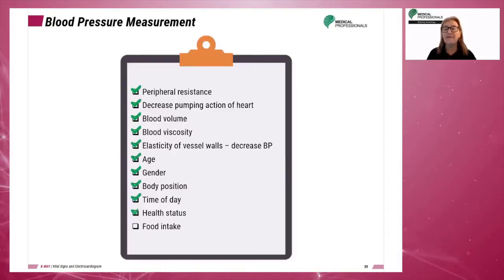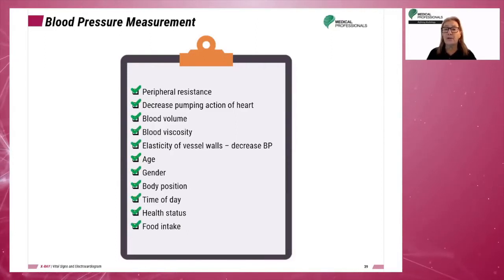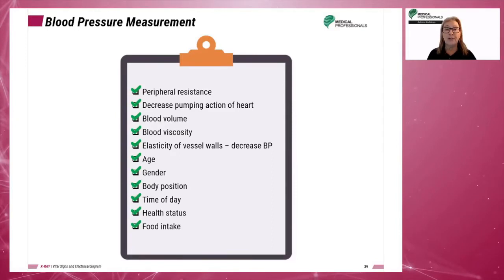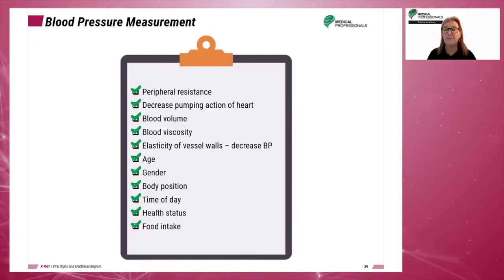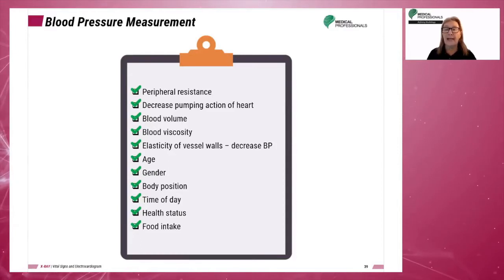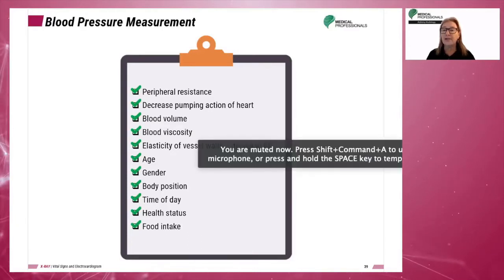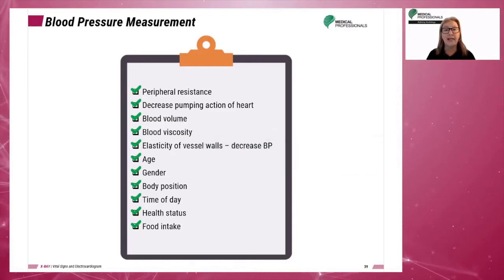Many factors can affect blood pressure. Increased peripheral resistance results in increased blood pressure. Decreased pumping action of the heart results in decreased blood pressure. Increased blood volume results in increased blood pressure, and decreased blood volume results in decreased blood pressure. An increase in blood viscosity results in increased blood pressure. Increased elasticity of vessel walls results in decreased blood pressure.